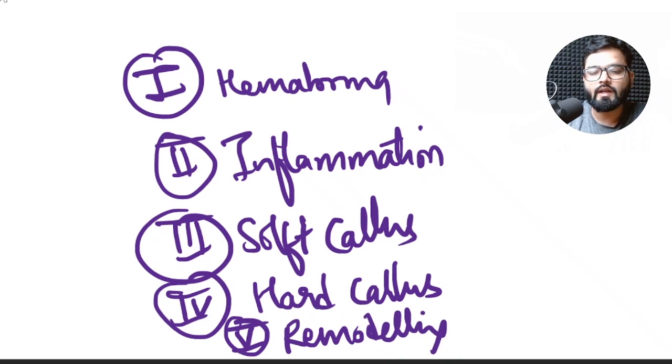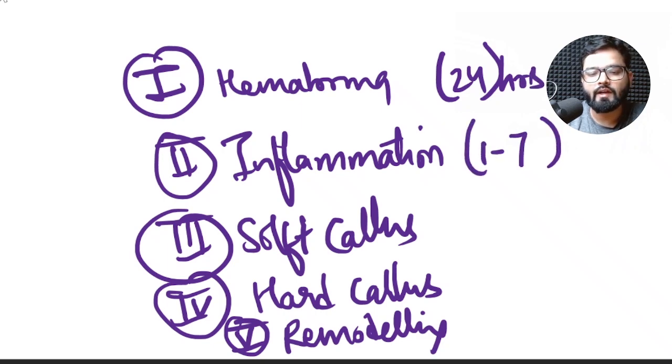What is the timeline? Hematoma formation occurs within 24 hours. Inflammation stays up to 1 to 7 days, soft callus formation at 3 weeks, hard callus at 3 months, and remodeling occurs at 1 to 3 years.